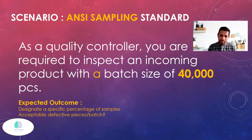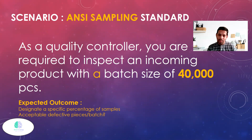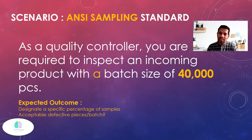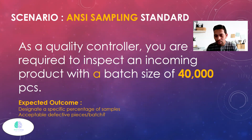What is the expected outcome? You need to design the specific percentage of sampling, and you need to identify the acceptable defect and defective rate — both per batch for this particular batch. Before I go further, any guesses? How much out of 40,000 pieces — how many samples will you take?